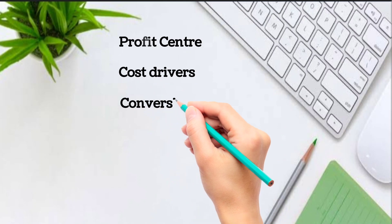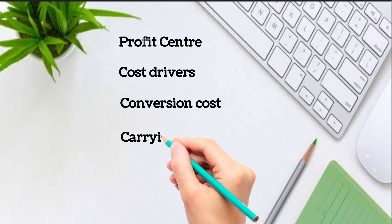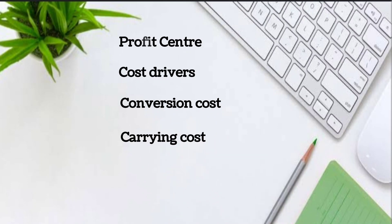Conversion cost is the cost required to convert the raw material into a product. It includes labor, direct expenses, overheads, etc. Carrying cost represents the cost to maintain the inventory — that is, the lockup cost of inventory, rent of the store, store operation expenses, etc.